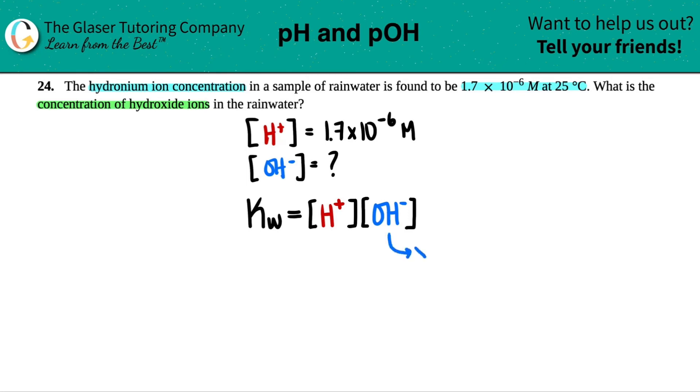We want to solve for the OH minus, so that would be labeled as X. The H plus would be 1.7 times 10 to the negative 6 molarity. But they didn't give us a KW value. KW is the ionization constant for water. But they told us it was at 25 degrees Celsius. That's room temperature. So whenever they give us 25 degrees Celsius, KW is a standard value. At 25 degrees Celsius, KW is 1.0 times 10 to the negative 14th. No units for KW. We just got to memorize that number at room temp.